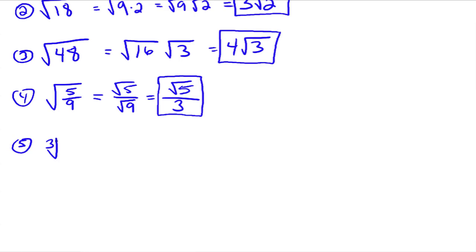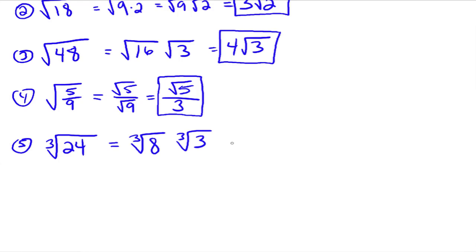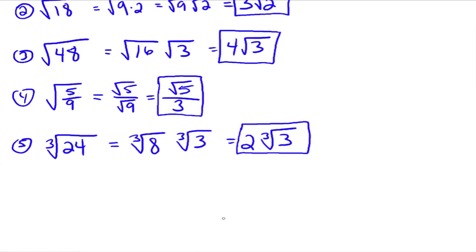Now the cube root of 24. Since we're working with cube roots, we look for the largest perfect cube that divides into 24 evenly — that's 8. So we rewrite this as the cube root of 8 times the cube root of 3. The cube root of 8 gives us 2, and the cube root of 3 stays as the cube root of 3. Remember, you must write the index 3 in the radical to denote cube root; without it, it's understood to be a square root.